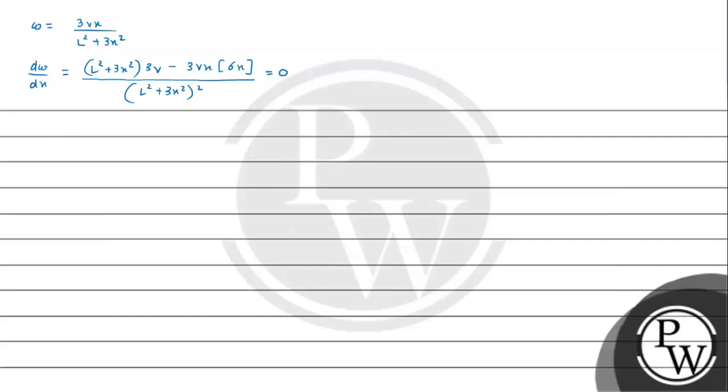3V - we can take 3V common. So the value of X that we are getting for omega to be maximum is coming out to be L by root 3. And this is precisely the maximum value of X we are getting.